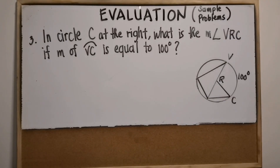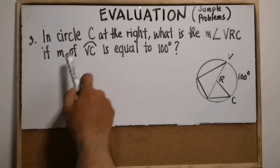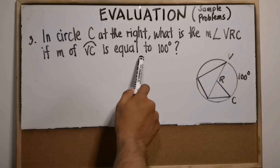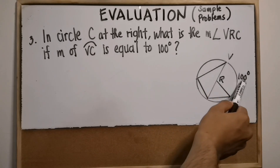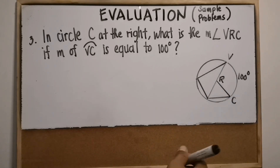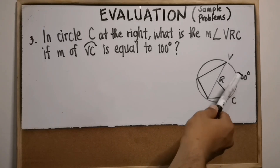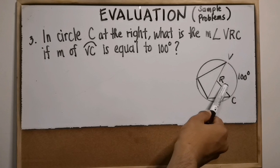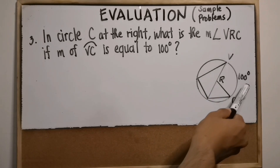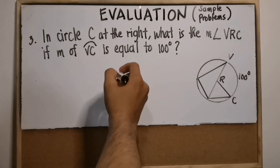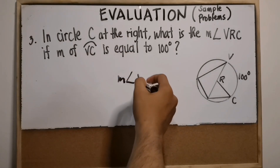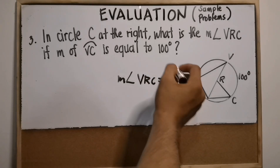Number three: in circle C, what is the measure of angle VRC if the measure of arc VC is equal to 100 degrees? The theorem states that the measure of the central angle is equal to its intercepted arc. So if the intercepted arc is 100 degrees, then the measure of central angle VRC is also 100 degrees.